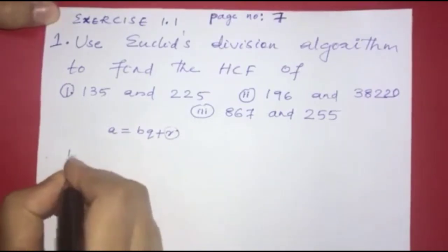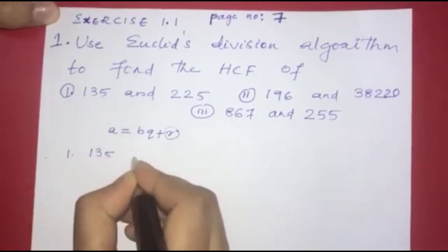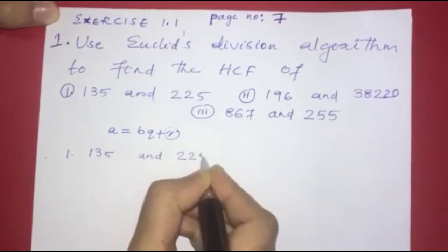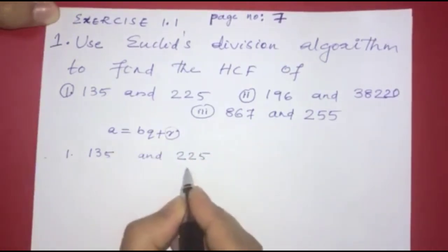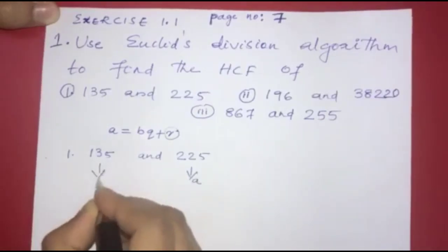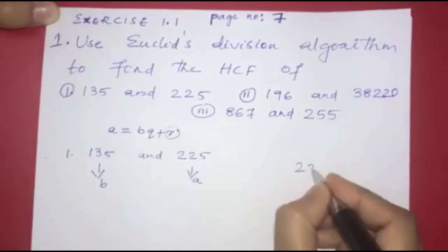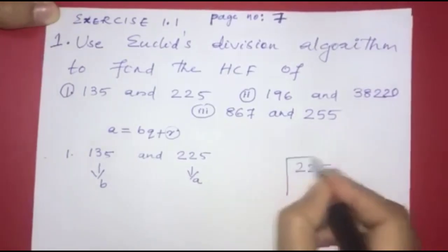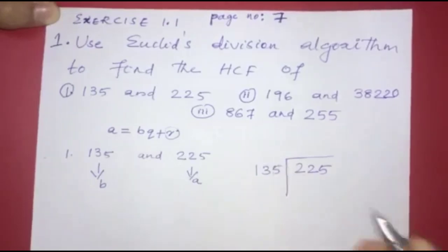Now let's start the first question: 135 and 225. In the first step, we identify the larger number as A and the smaller as B, then we divide the larger number by the smaller.